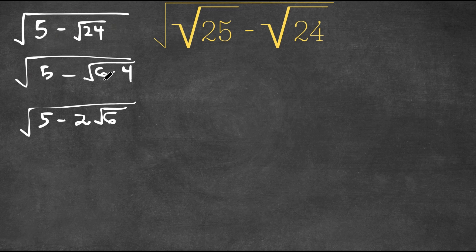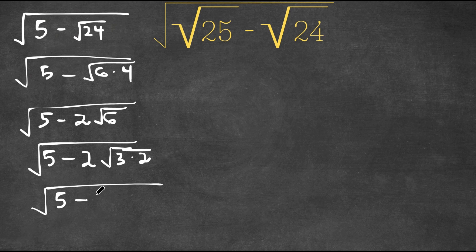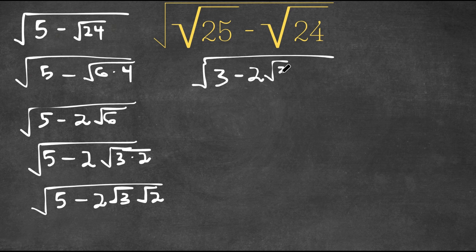The square root of 4 is 2; however, the square root of 6 is not a whole number. Now the square root of 6 — well, 6 is equal to 3 times 2. So now we have the square root of 5 minus 2 times the square root of 3 times 2. And this is equal to the square root of 5 minus 2 times the square root of 5 minus 2 times the square root of 3 times the square root of 2, plus 2 at the end.